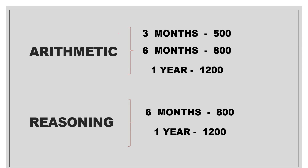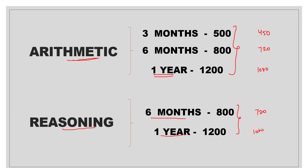We will choose the courses. If we choose Arithmetic, we have 3 months, 6 months, and 1 year options. With the 10% discount applied, 3 months is ₹450, 6 months is ₹720, and 1 year is ₹1080. For Reasoning, the 6 months plan is ₹720 and 1 year is ₹1080 with the 10% discount.